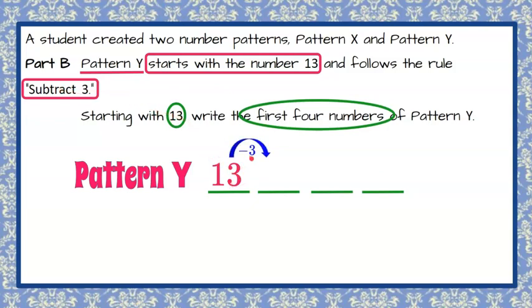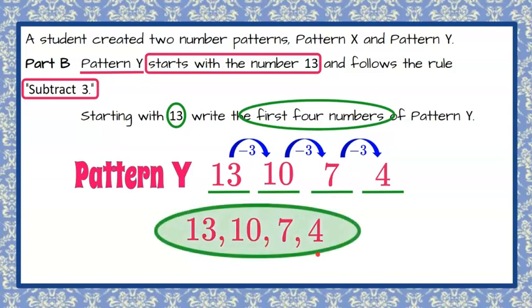Our rule is to subtract 3 this time. So 13 subtract 3 gives me 10. 10 subtract 3 is 7. 7 subtract 3 is 4. So pattern Y is 13, 10, 7, 4.